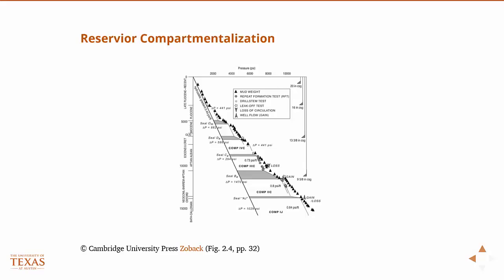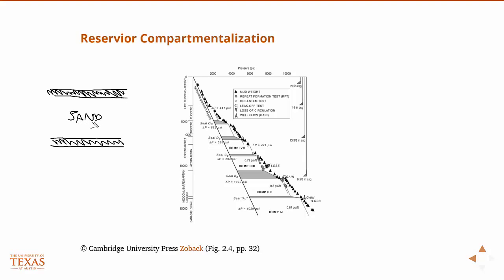We're talking about compartmentalization — areas that are highly connected separated by areas of impermeability. A good example is sand and shale layers: shales are basically impermeable, while sands are highly connected. Where you get hydrostatic pore pressures are in areas of high connectivity or high permeability, where pores are well connected to each other and you get roughly uniform, hydrostatic pore pressures.